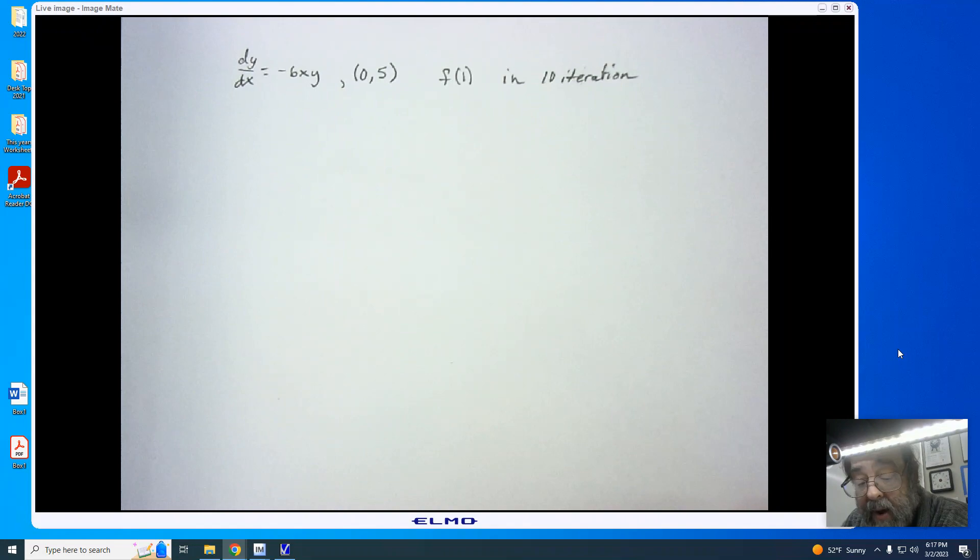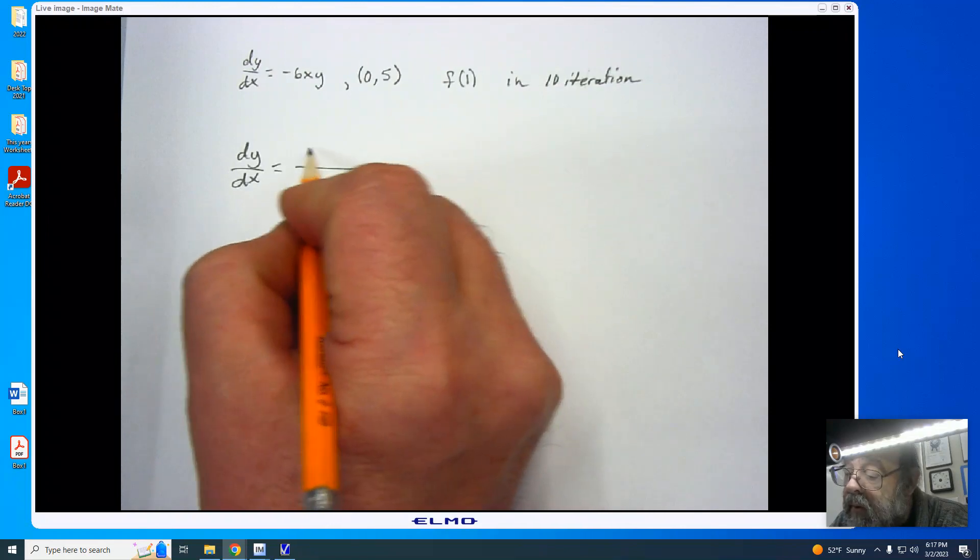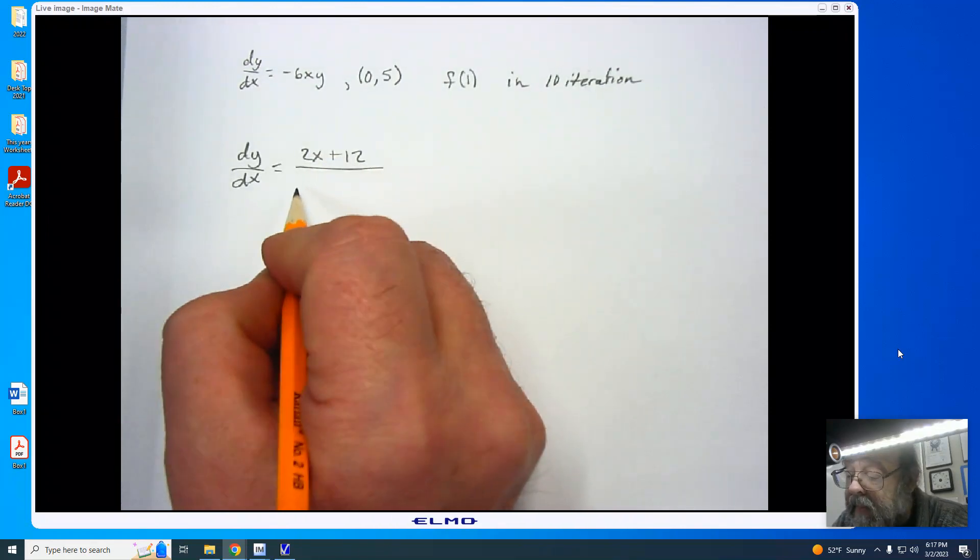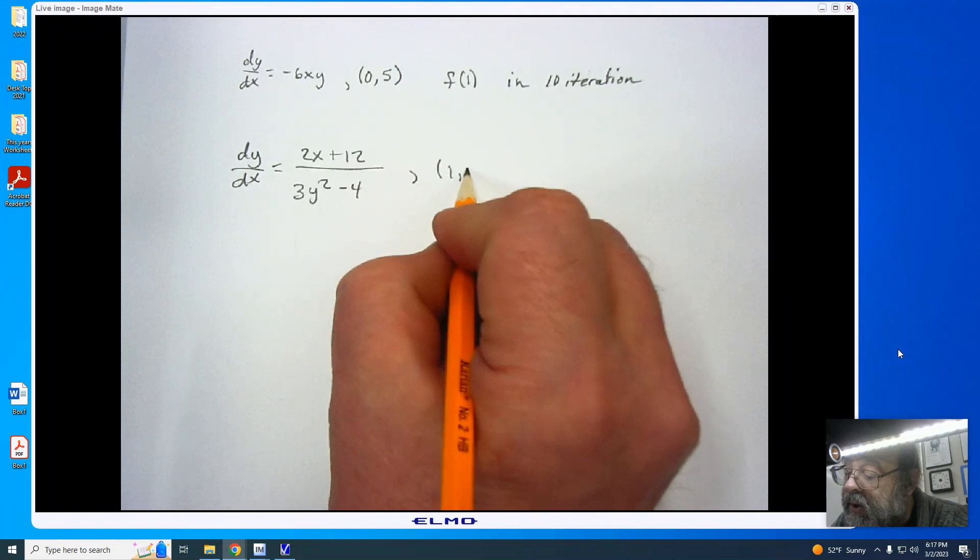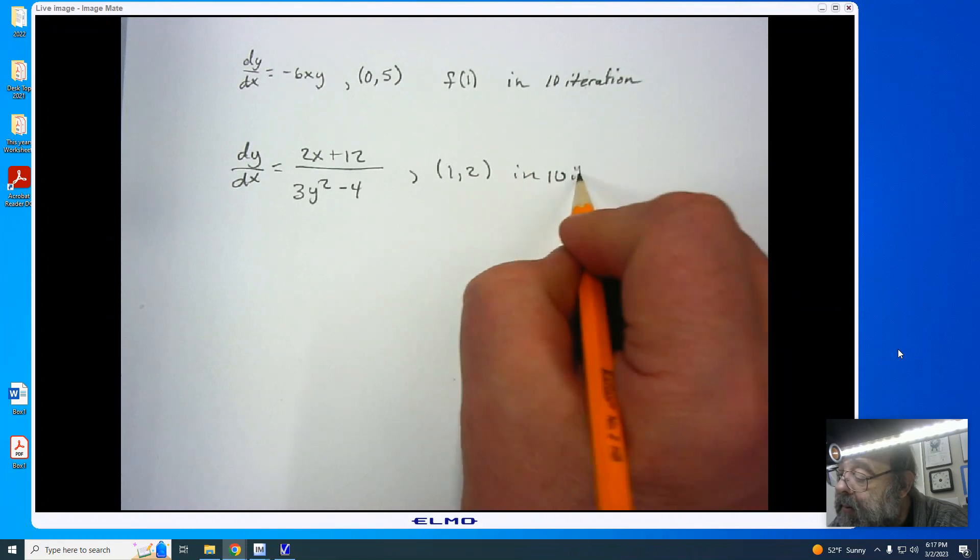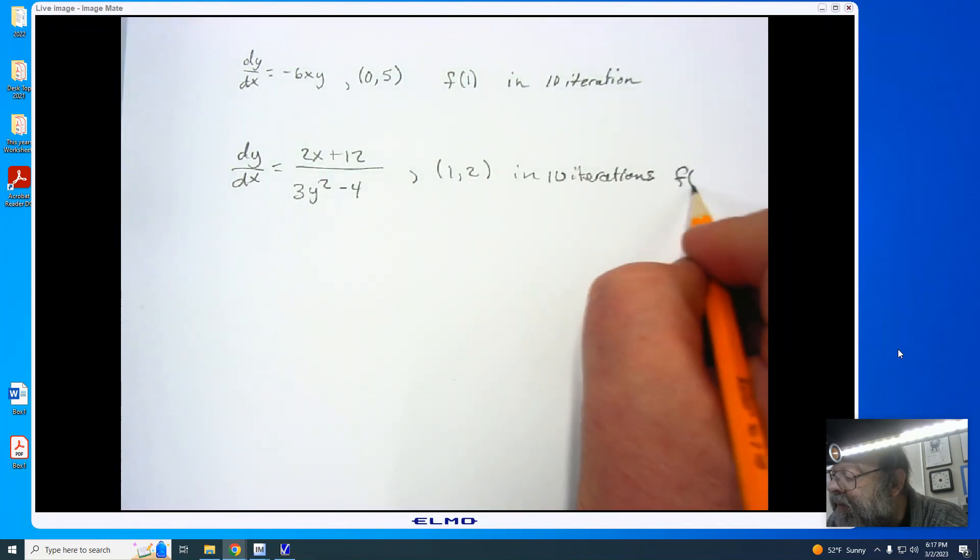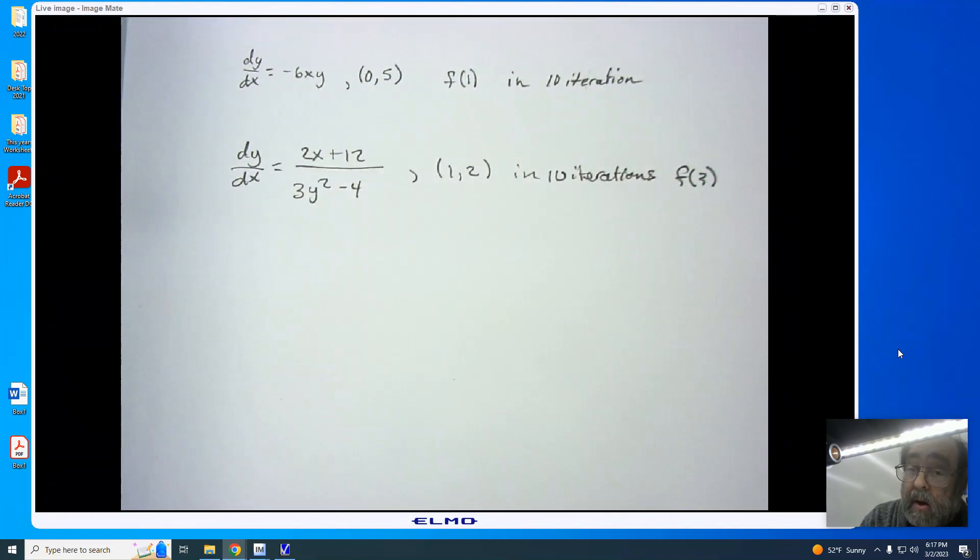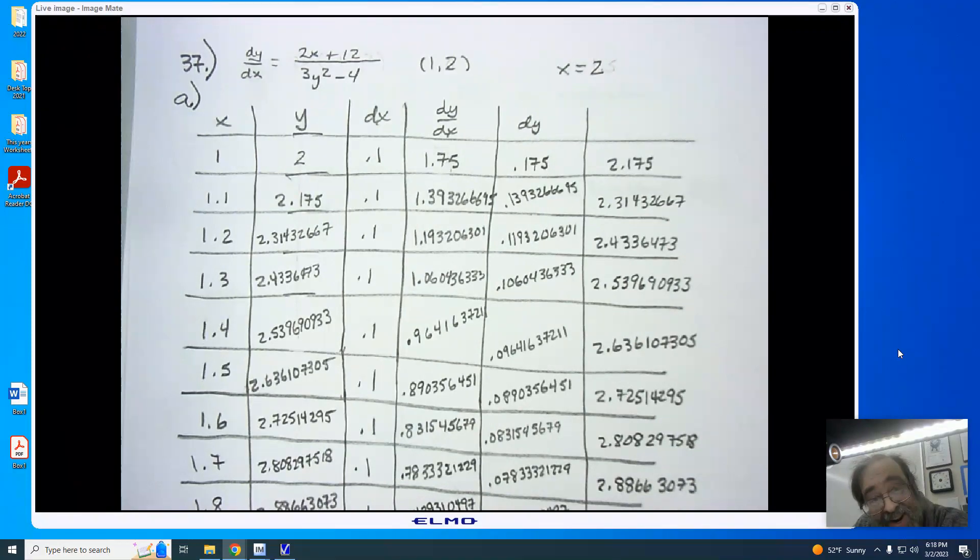Number 37 is now asking us to work with dy/dx equals (2x + 12) divided by (3y squared minus 4). The value that we are given is (1, 2). We are looking at 10 iterations in order to find our y or f(3). Now, this is a little bit longer. It does require us to be a little bit more careful, but it is using the calculator, thankfully. And here you see my work. So, once again, here we go.